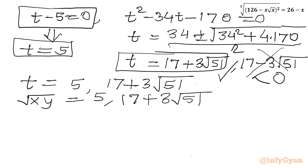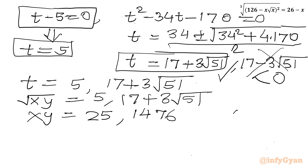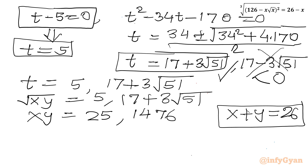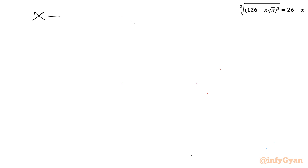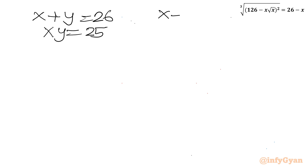Squaring to get xy: from t = 5 we get xy = 25, and from t = 17 + 3√51 we get xy ≈ 1476. So we consider two systems, each with x + y = 26, paired with xy = 25 and xy = 1476 respectively.